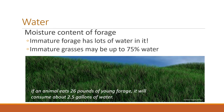One important factor influencing water consumption is that there's quite a lot of water in forage. Immature, young, growing forage actually has a lot of water in it. For example, immature grass can have up to 75% water. If you do the math, an animal that ate 26 pounds of young green growing forage would consume two and a half gallons of water, going quite a ways in meeting its water requirement.